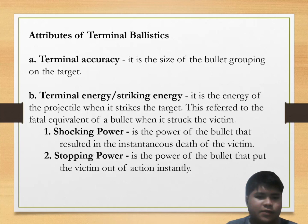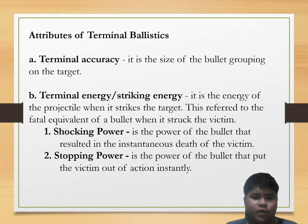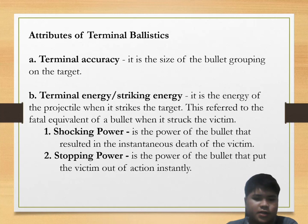The attributes of terminal ballistics include: terminal accuracy — the size of the bullet grouping on the target; terminal energy or striking energy — the energy of the projectile when it strikes the target, referring to the fatal equivalent of the bullet when it strikes the victim. This has two sub-categories: shocking power, which is the power of the bullet that results in the instantaneous death of the victim, and stopping power, which is the power of the bullet that puts the victim out of action instantly.